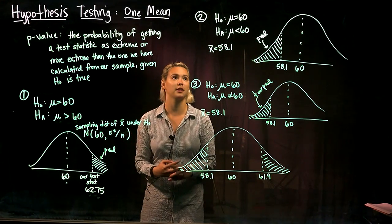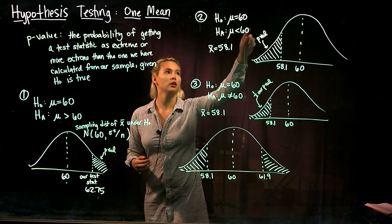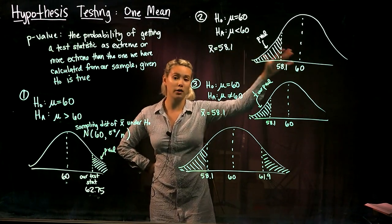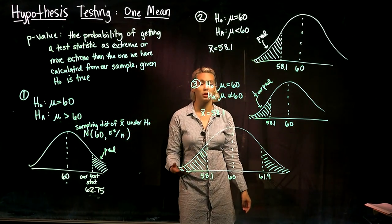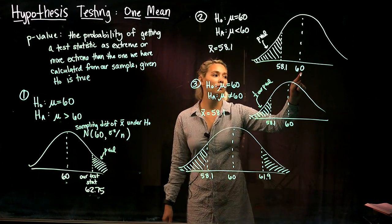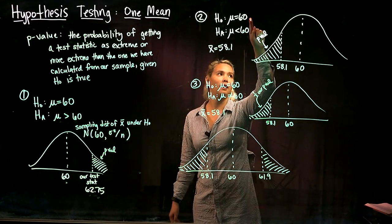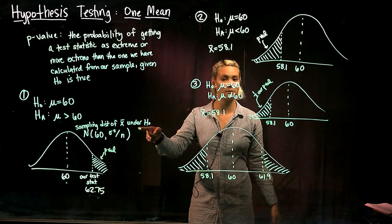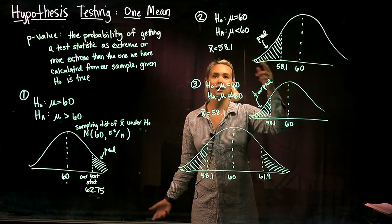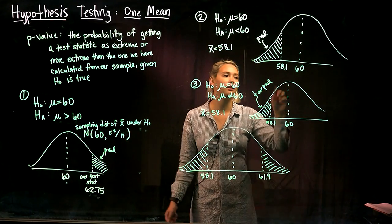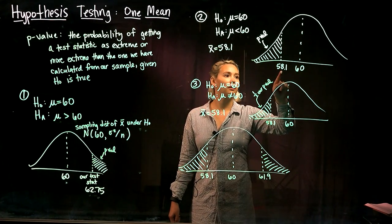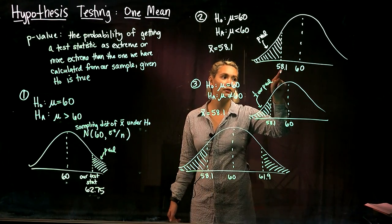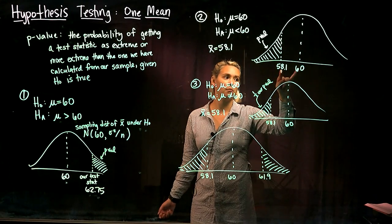How about if our alternative hypothesis is that our parameter is less than some value? Let's think about if our null was mu equals 60 and our alternative was mu is less than 60. We draw out a similar picture — a normal distribution with the mean given by the null hypothesis. This is our sampling distribution of x-bar under the null hypothesis. Say that we took a sample and we got x-bar equals 58.1. We would draw in 58.1, and then our p-value would be the probability of getting a test statistic as extreme or more extreme than 58.1 under the null hypothesis that mu equals 60.